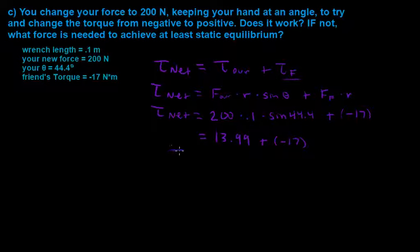So our net torque is going to equal, if we round this up to 14, it's just going to equal negative 3, because we're not worried about exact details here. We just want to know if our torque became positive or not. And as we can see, it is still negative.